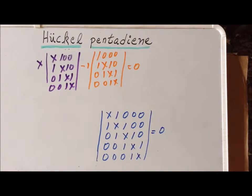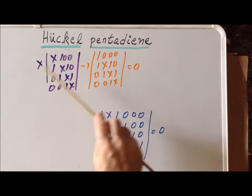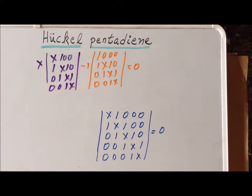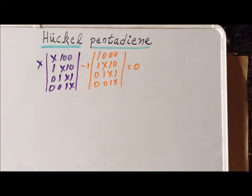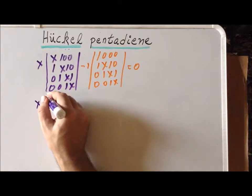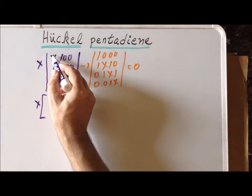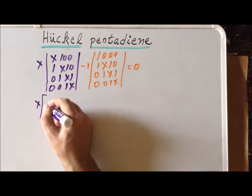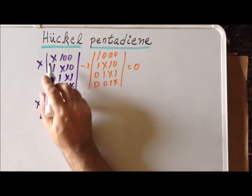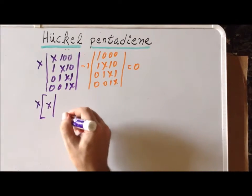We have now reduced our five-by-five determinant into a linear combination of four-by-four determinants. We cannot directly evaluate a four-by-four determinant, so we have to simplify these as well using expansion by minors. We pull the x coefficient out in front, and expand the four-by-four determinant within brackets down the first column. The first coefficient is x, and removing the first column and first row forms a three-by-three determinant.